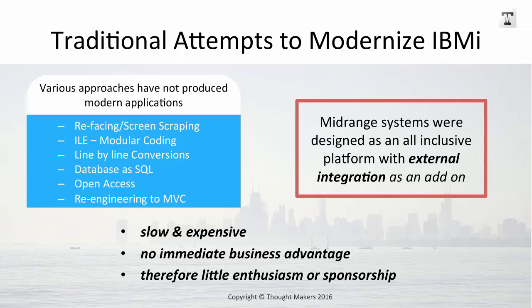Open access is another way to essentially use a legacy approach to monolithic programming but throw out the user interface using different technology. And re-engineering to model-view-controller, which was adopted in the mainstream around the turn of the century and has largely been superseded by service-oriented architecture, APIs, and microservices. All of these attempts are slow, they're expensive, they don't necessarily provide any immediate sustainable business advantage, and therefore most businesses don't have much enthusiasm or provide sponsorship to these projects. One of the major problems is that mid-range systems were designed as an all-inclusive platform and external integration was added later on.